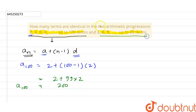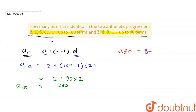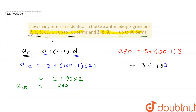Similarly, we find the 80th term in the second AP by applying the same formula. The first term is 3, n is 80, and the common difference d is 6 minus 3, which equals 3. So a₈₀ = 3 + (79 × 3) = 3 + 237 = 240.